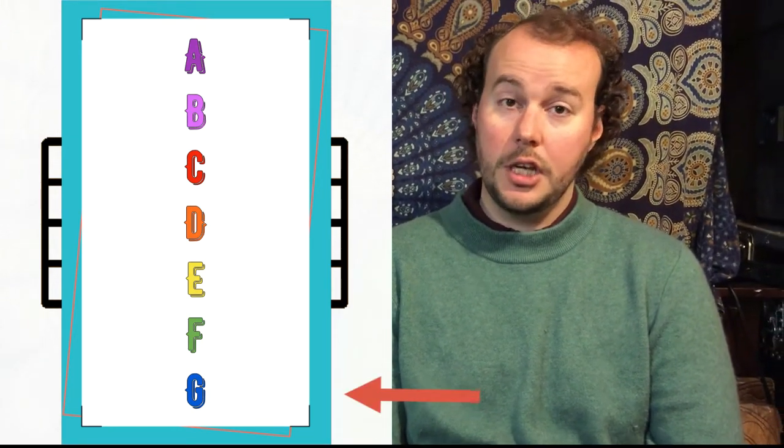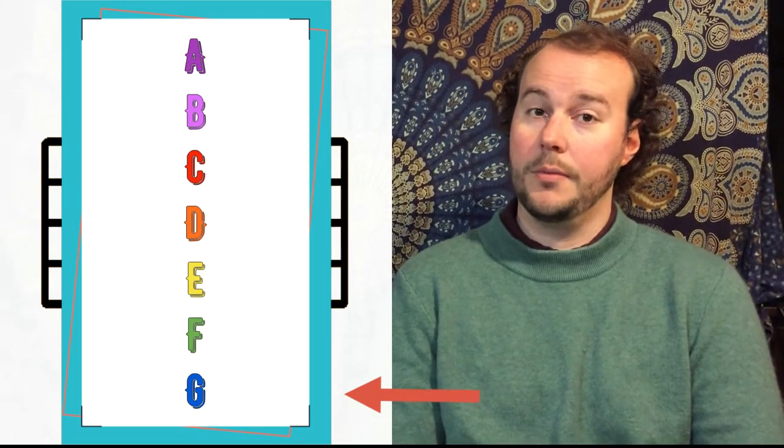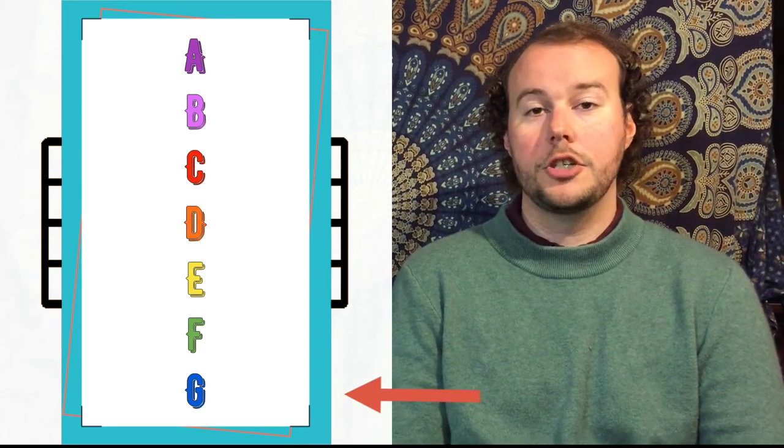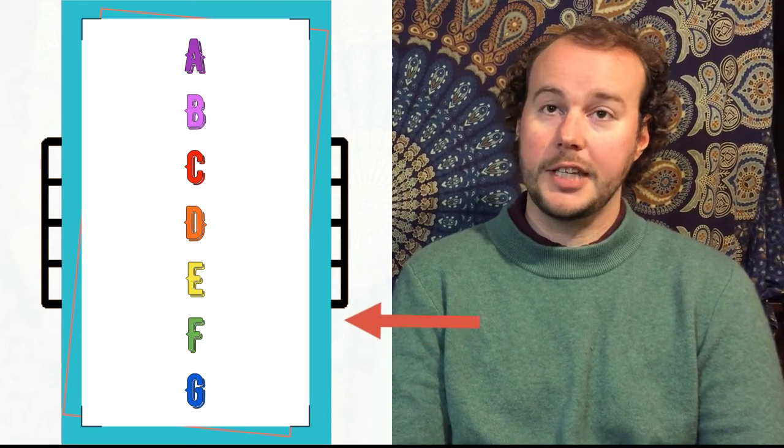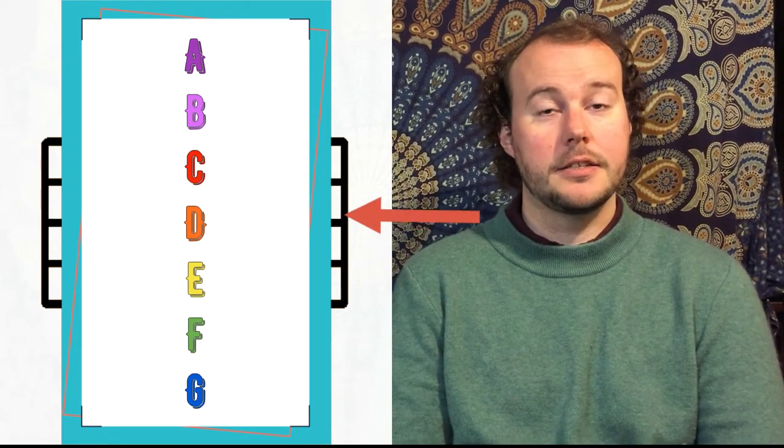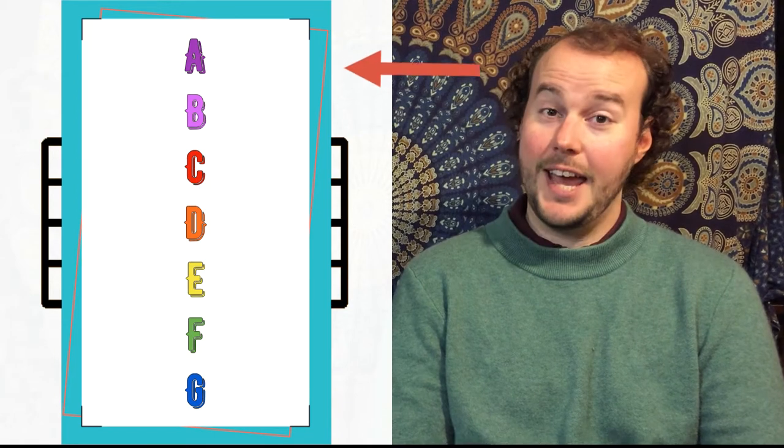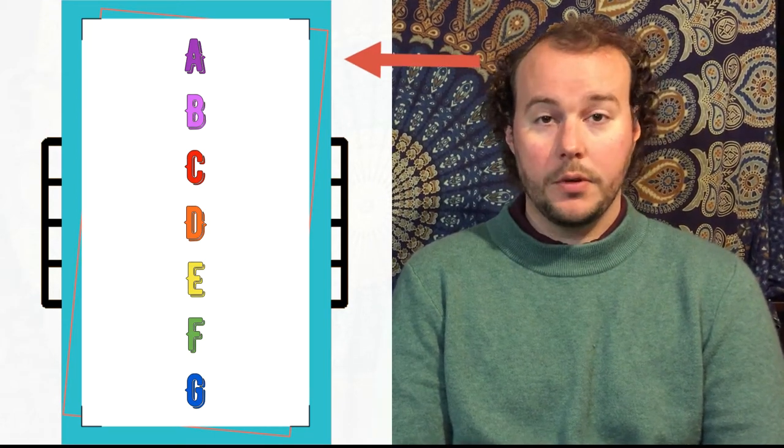So we can also go backwards. So if we start at G, F, E, D, C, B, and A. So as we go backwards through the musical alphabet, we're going to go downwards in pitch.